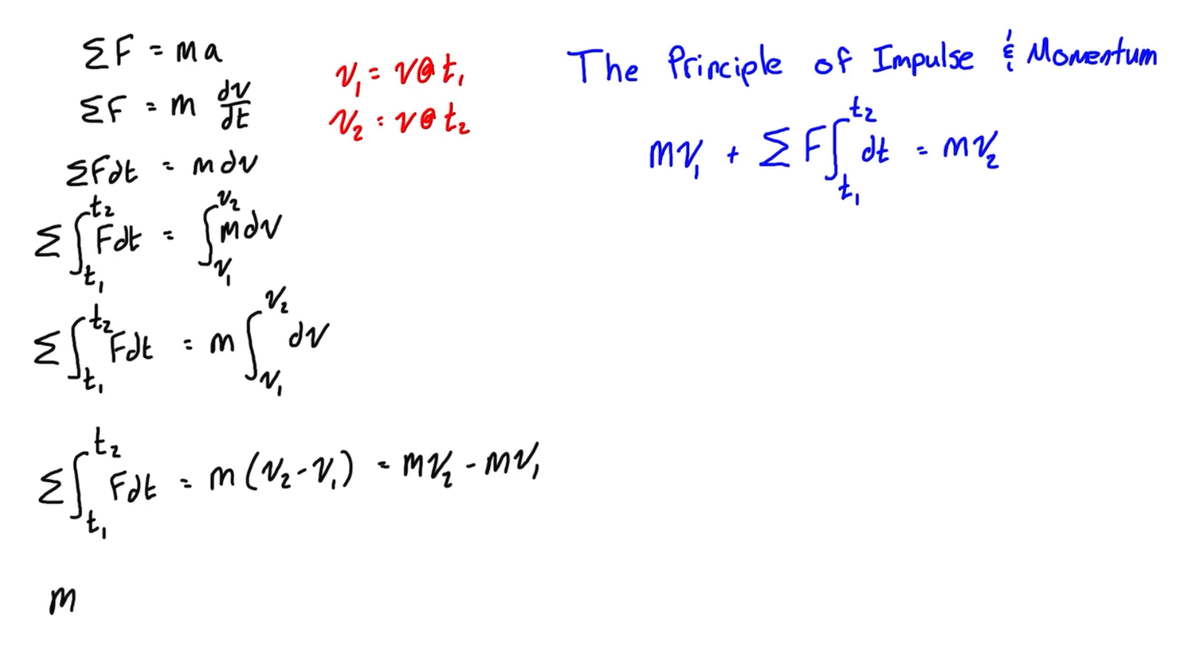We have mv1 plus that integral is equal to mv2. Really what this is saying is mv1 - this is the mass times the velocity at time one, so mass times velocity is momentum at time one. mv2 - mass times velocity at time two. So this is initial momentum plus the sum of all impulses is equal to the final momentum. That's exactly what the principle of impulse and momentum states: momentum one plus impulses is equal to momentum two.